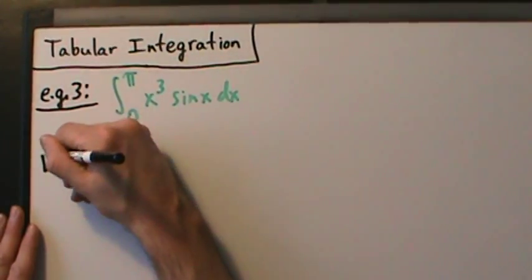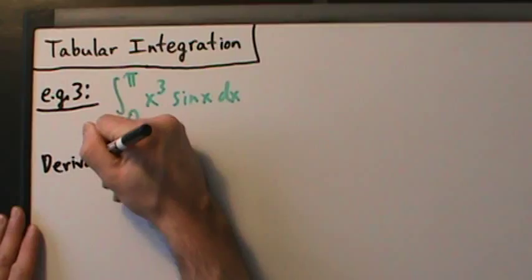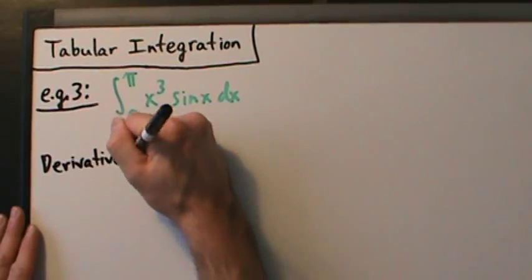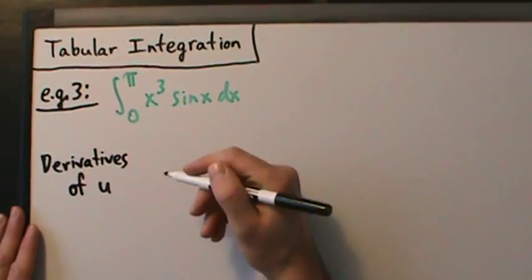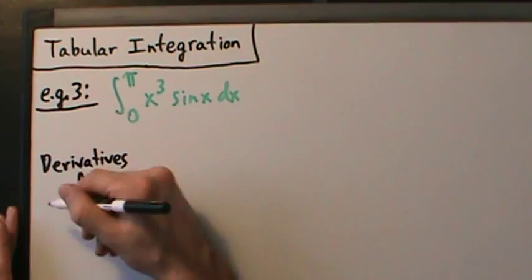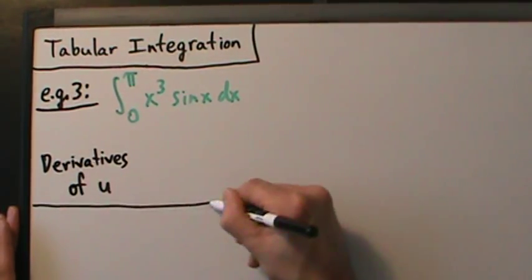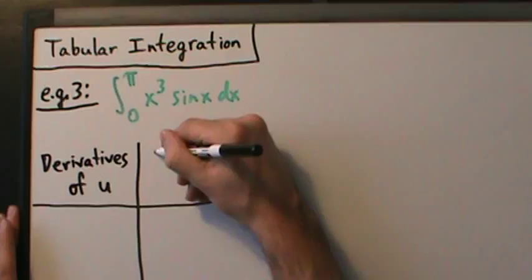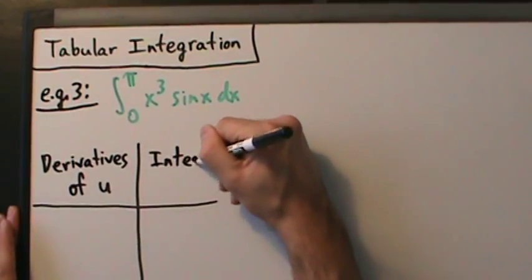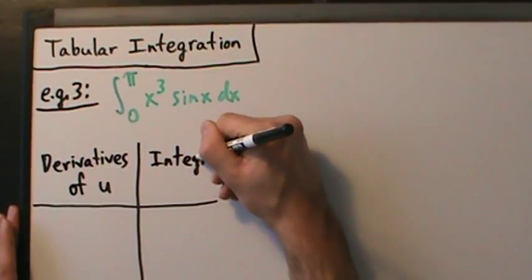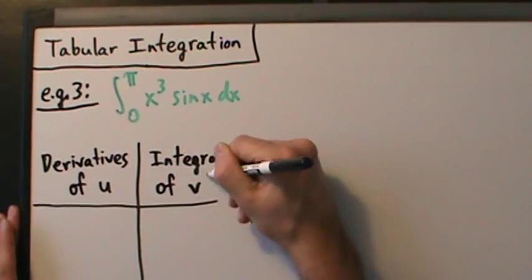The first column is derivatives of u, and the second column is integrals of v-prime.